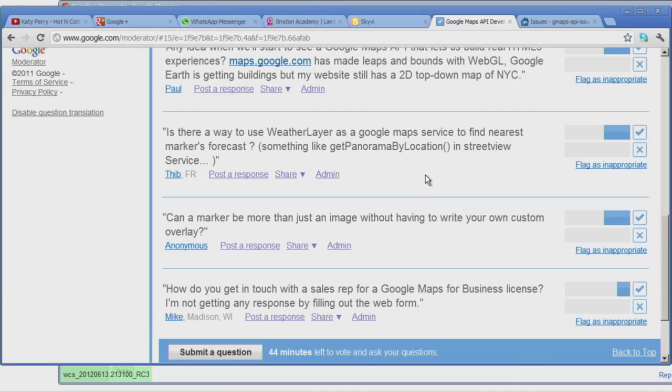So then next question is, is there a way to use weather layer as a Google Maps service to find nearest markers forecast? Something like get panorama by location in Street View service. No. The weather layer is purely a layer on top of the map. I think what you're asking for is a weather service. Go ahead and file a feature request for that. No promises. But we'd love to see future requests for such things. And by the way, we have an issue tracker. Just search for gmaps API issues. And that's where you can file feature requests and bugs as well.